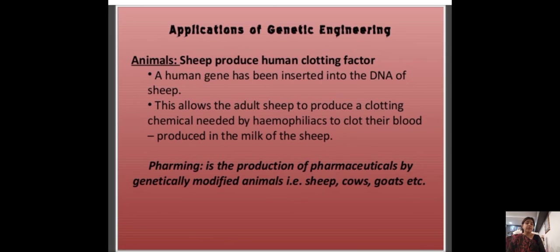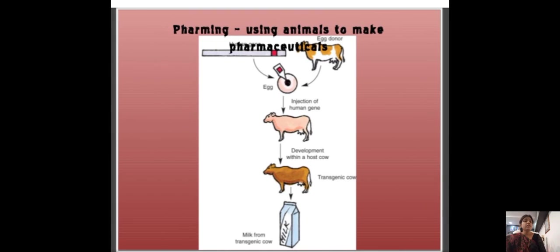Pharming is the production of pharmaceuticals using genetically modified animals such as sheep, cows, and goats. It refers to using animals to make useful pharmaceutical products.